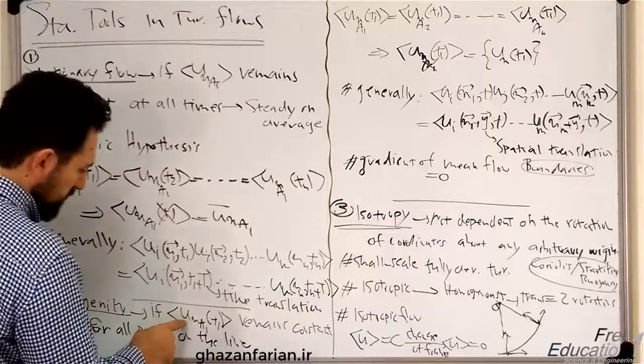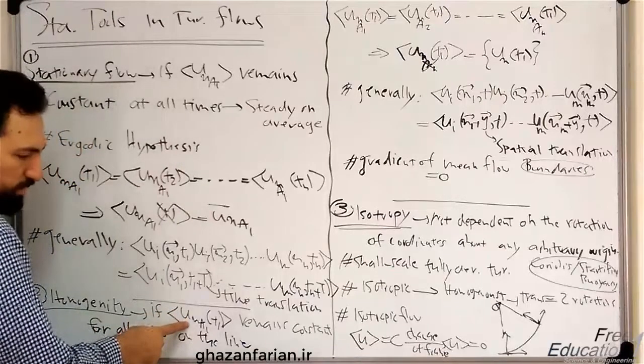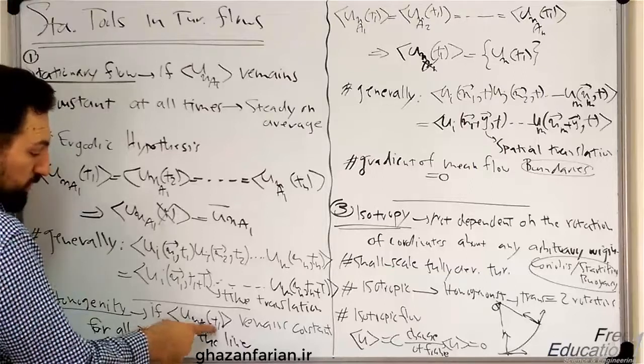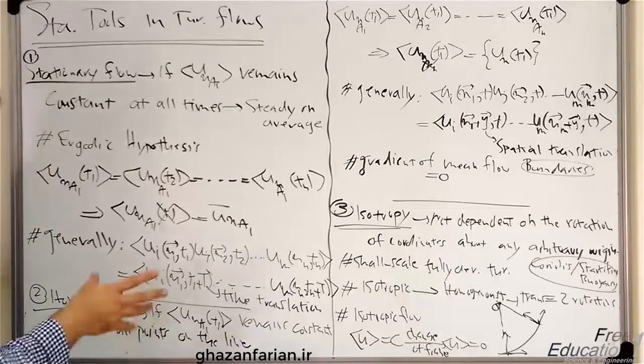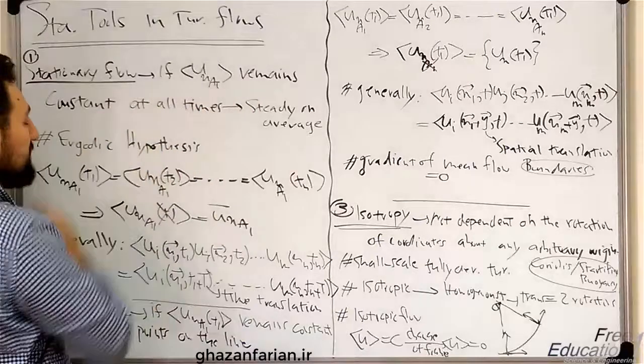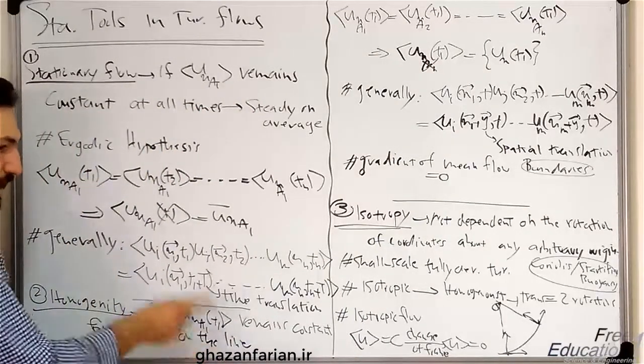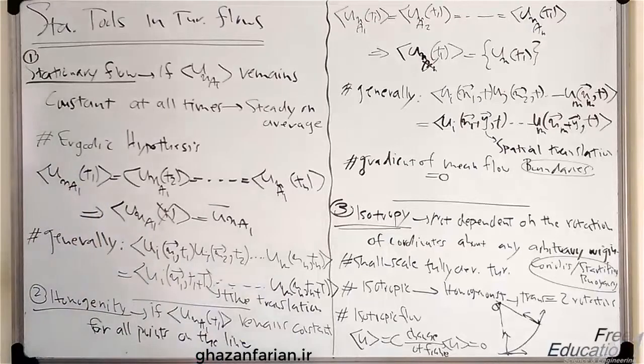if the ensemble average of x velocity at point A1 at time T1 remains constant, but this time for all points on a line, on a specific line.